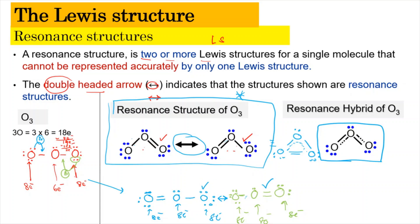For Chapter 4, the resonance structure representation with a double-headed arrow is more popular and more applicable. In exams or questions, the resonance structure will always be shown with a double-headed arrow. You'll also notice the shape differs slightly — one looks like a straight line and one looks like a bent shape — and the difference is due to VSEPR theory, which will be covered in subtopic 4.2 in the next video. For now, both drawings are acceptable.